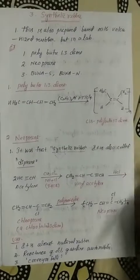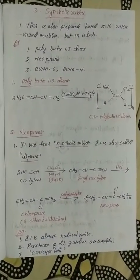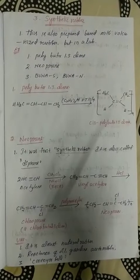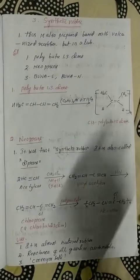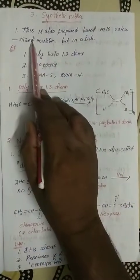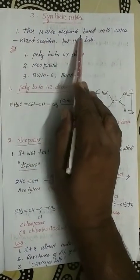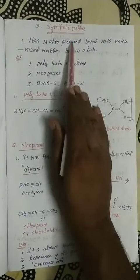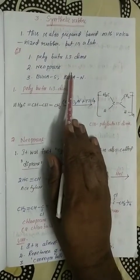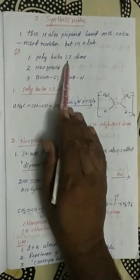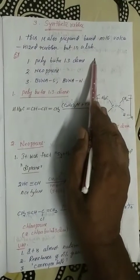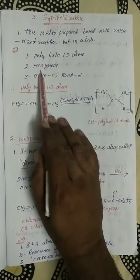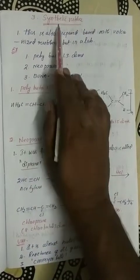The third category is synthetic rubber. Rubbers are obtained from natural sources as well as prepared in the laboratory. There are four important synthetic rubbers: polybutadiene (polybuta-1,3-diene), neoprene, Buna-S, and Buna-N.